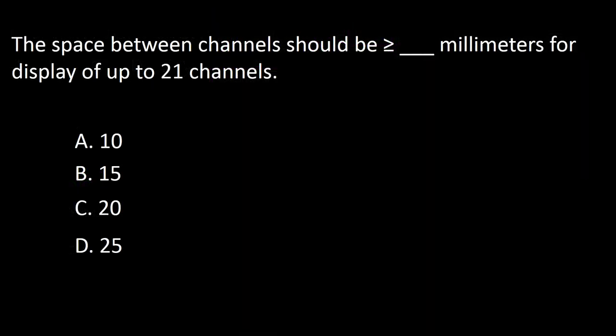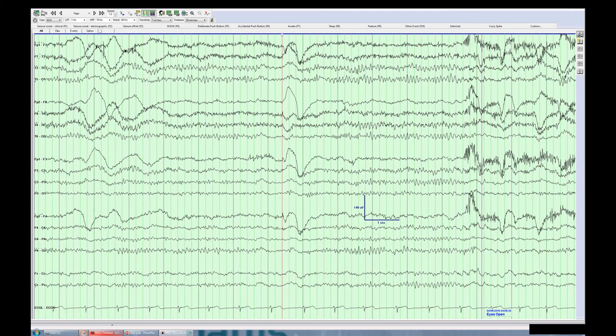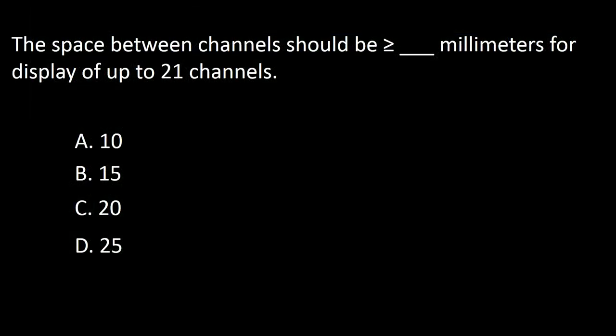Next question: the space between channels should be equal or more than dash millimeters for display of up to 21 channels. A: 10, B: 15, C: 20, D: 25. The distance between channels should be equal or more than 10 mm. The answer is A.